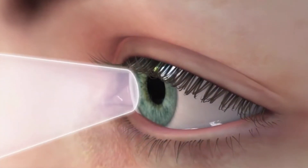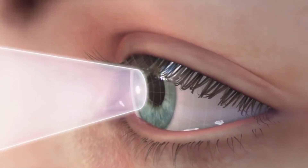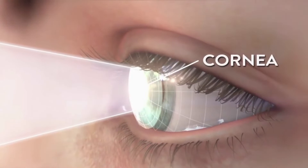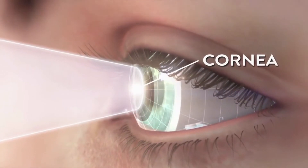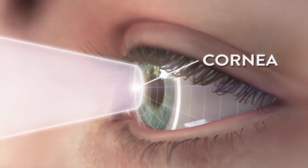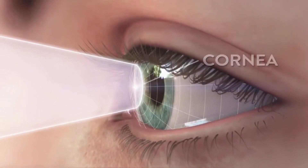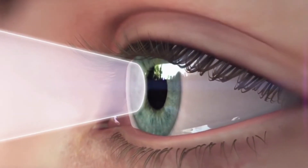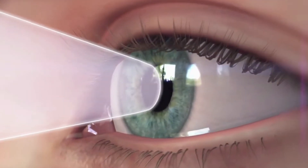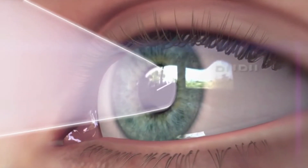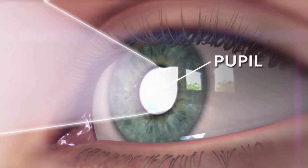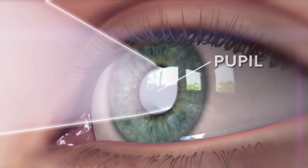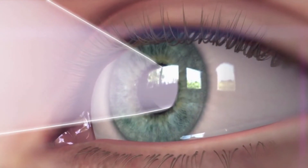The pupil is the dark circular opening in the center of the iris and is where light enters the eye. The pupillary light reflex, or photopupillary reflex, is a reflex that adjusts the diameter of the pupil in response to